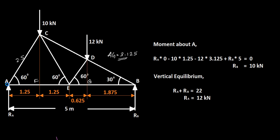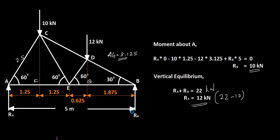Now we find the support reactions at A and B. Taking moment about A: a 10 kN force at 1.25 m creates a clockwise (negative) moment; 12 kN at 3.125 m creates a clockwise (negative) moment; RB at 5 m creates an anticlockwise (positive) moment; RA acts at zero distance so no moment. The equation gives RB = 10 kN. From vertical equilibrium, RA + RB = 22 kN, so RA = 12 kN.